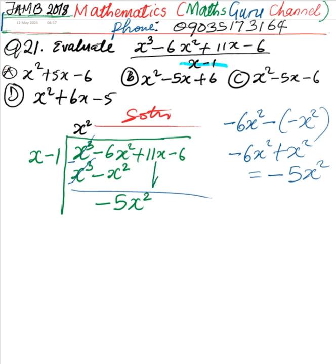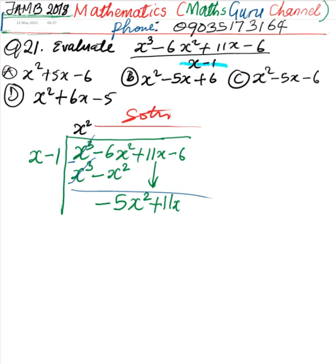We bring down the next term, which is positive 11x. Then negative 5x squared divided by x gives us negative 5x. Negative 5x times x gives us negative 5x squared, and negative 5x times negative 1 gives us positive 5x.